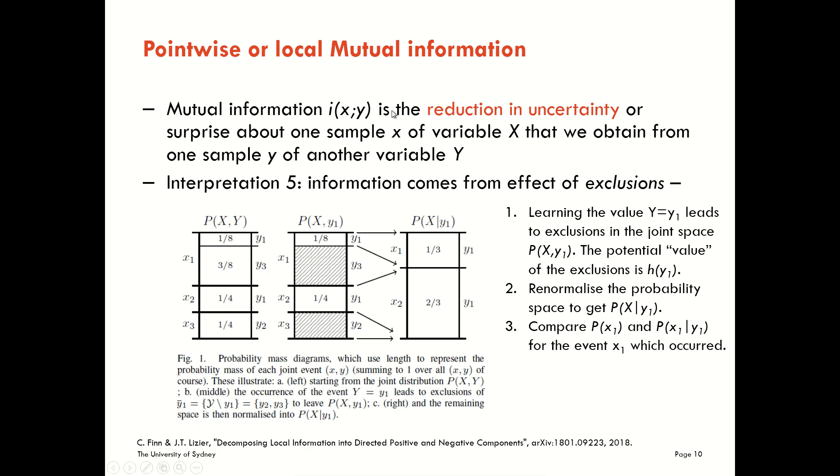Once we've made those exclusions, we then renormalize the probability space to get P of X given Y1. And that's what we've got here. We've renormalized our space for the remaining probability values, and we've got one-third and two-thirds there. So to evaluate the pointwise mutual information in this case, we simply compare our posterior probability of the value of X that occurred, which is P of X1 given Y1 here, compared to the prior probability on P of X1 over here. We take the log ratio, and that gives us the pointwise mutual information for this realization.